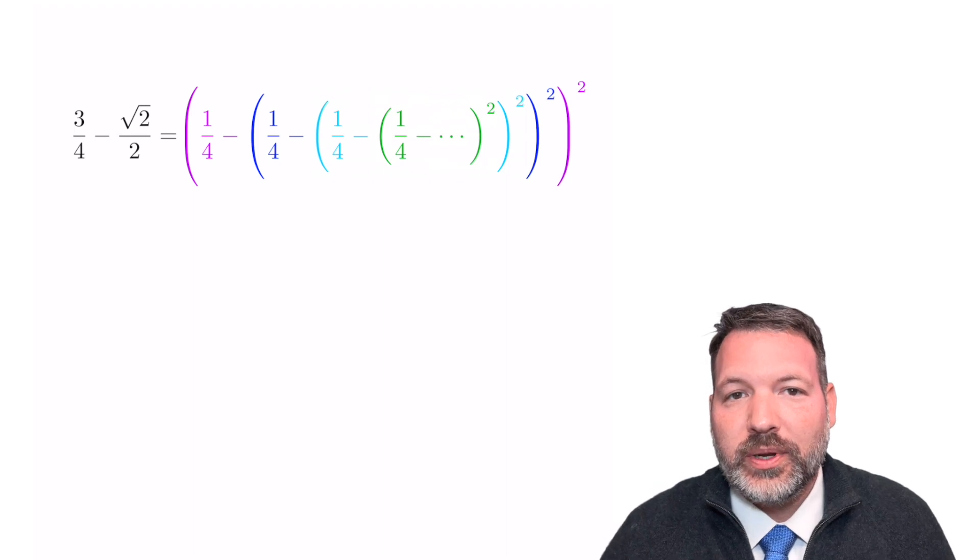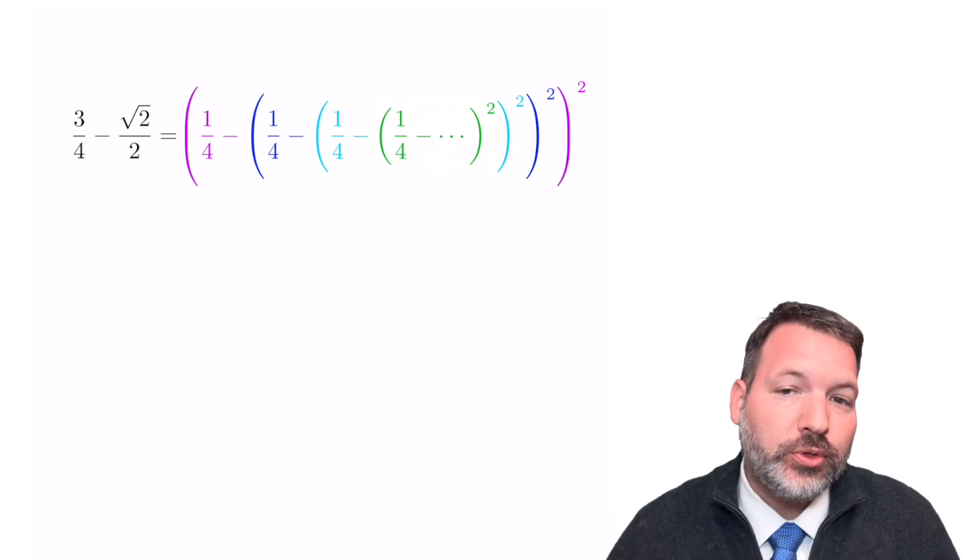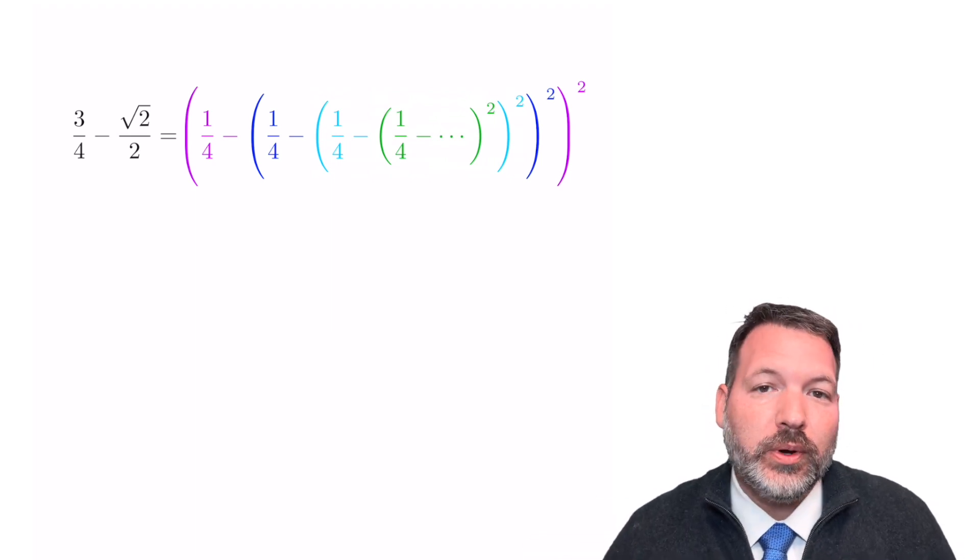An alternate way of writing this would be to say that this crazy nested series—one fourth minus, one fourth minus, one fourth, on and on forever, squared, squared, squared, squared—is equal to three-fourths minus the square root of two divided by two.